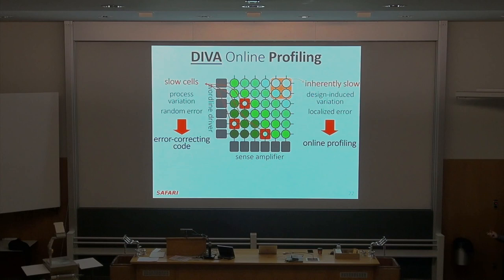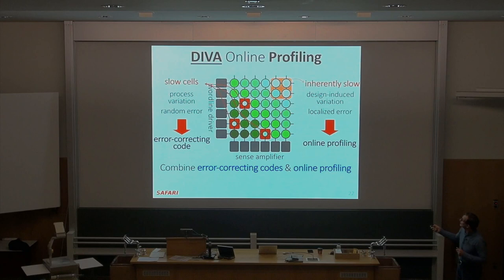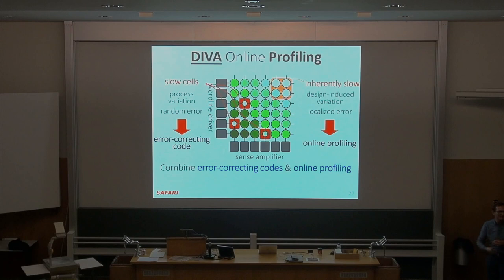So basically the key idea is to handle random process-variation-induced errors due to reduced latency with error correcting codes, and everything else with online profiling. This work figures out the minimum latency to operate DRAM based on the inherently slow region, operates all cells using that latency, and errors in other regions are handled using error correcting codes. You can also use ECC to further improve the latency.